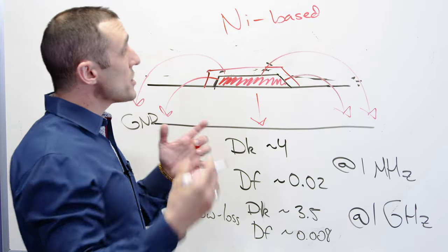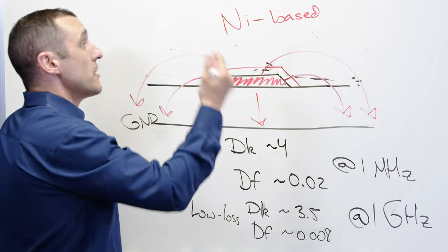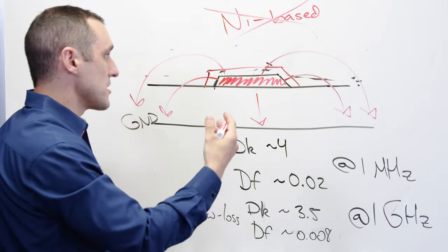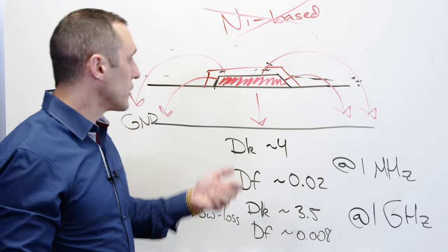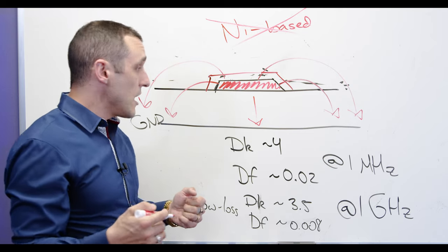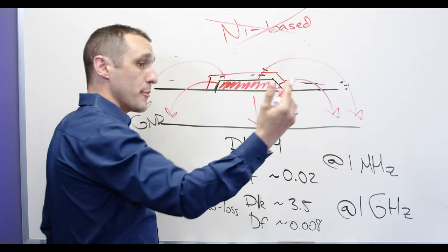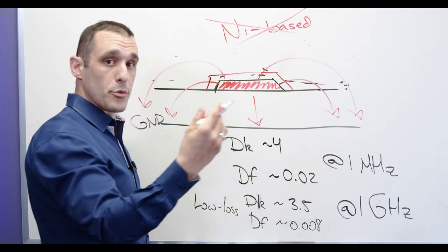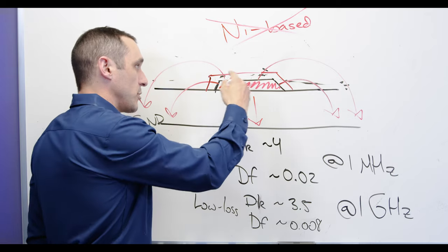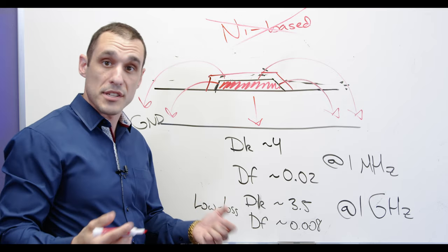The reason we would like to avoid nickel-based platings is two reasons. First of all nickel is ferromagnetic so it increases magnetic losses or the losses in the magnetic field during propagation along the trace. The other reason that we like to avoid nickel-based platings is because nickel when used as a layer to bond to some other metal can increase the roughness of that other metal that it's bonding to. So it can create a rough layer in this plating material and of course if you increase the roughness you then increase the losses.